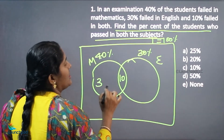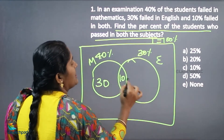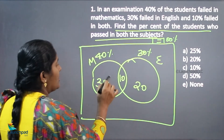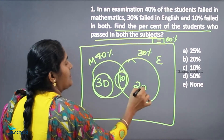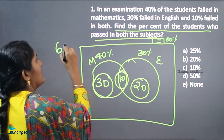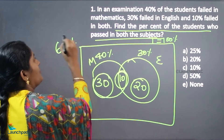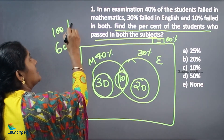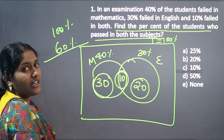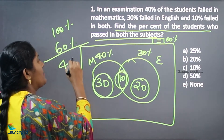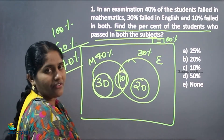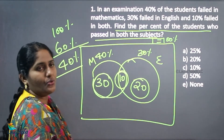40 minus 10 is 30. 30 minus 10 is 20. So here, 30 plus 10 plus 20 — what is your answer? 60. From your 100 percentage, 60 percentage students failed in the entire subjects.